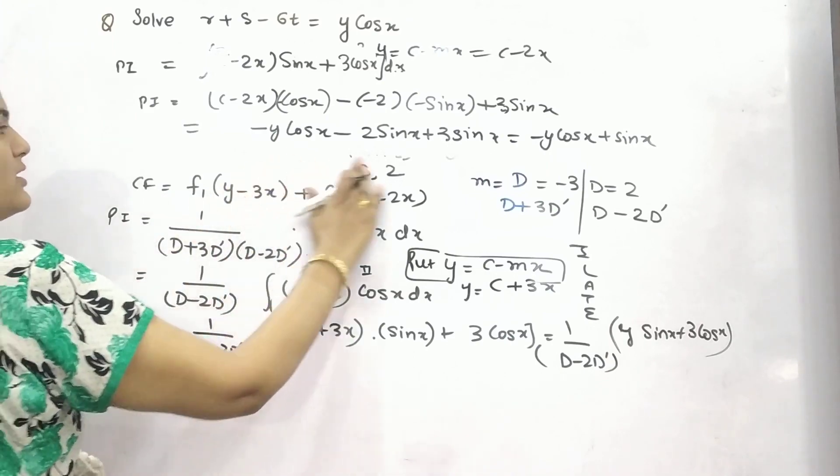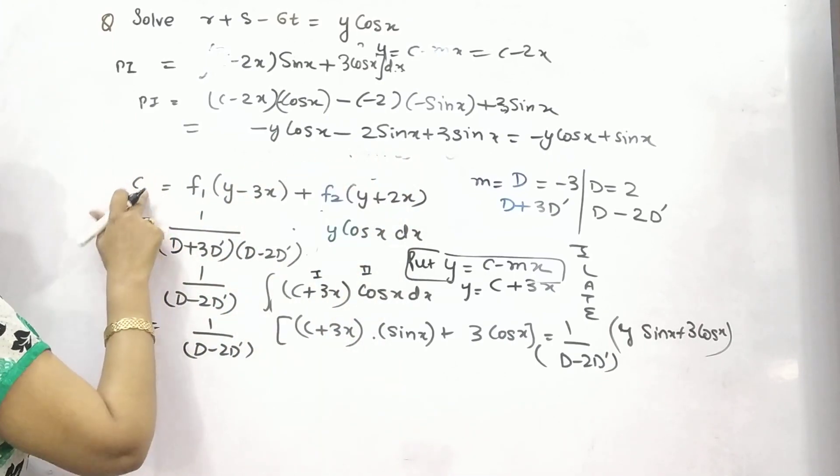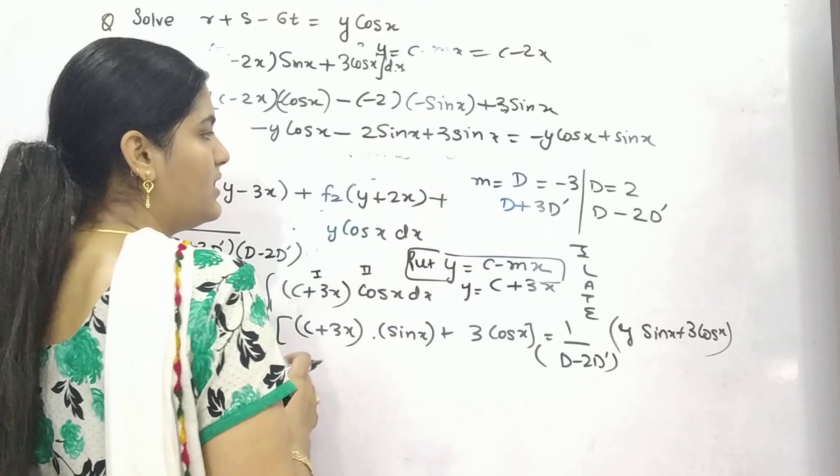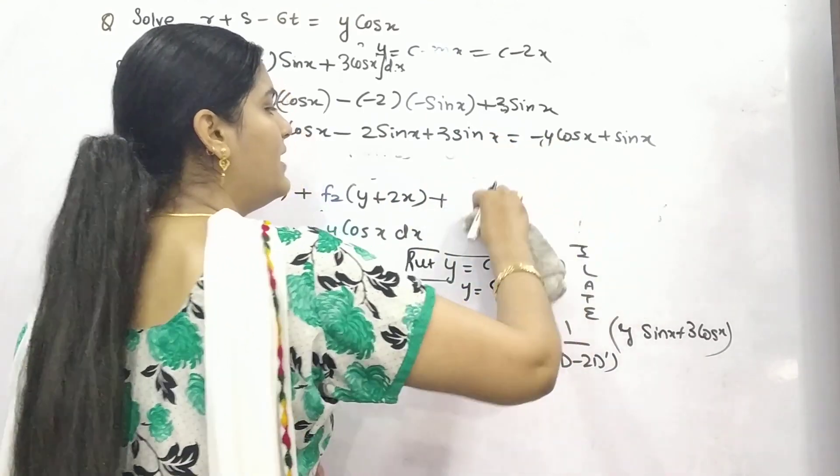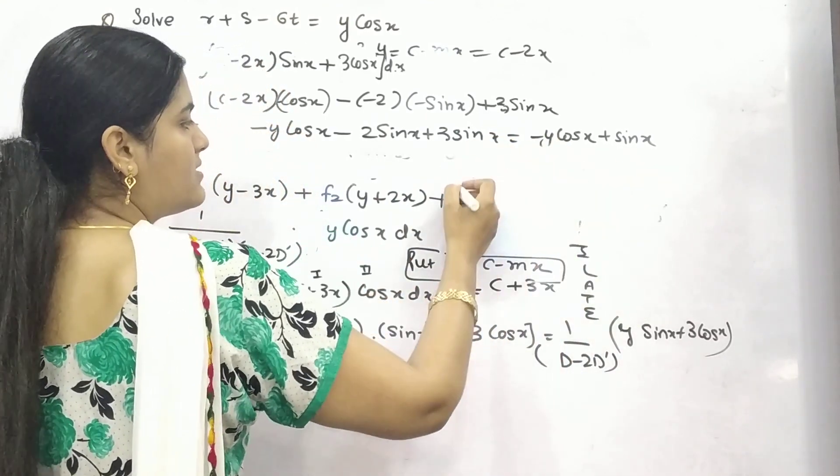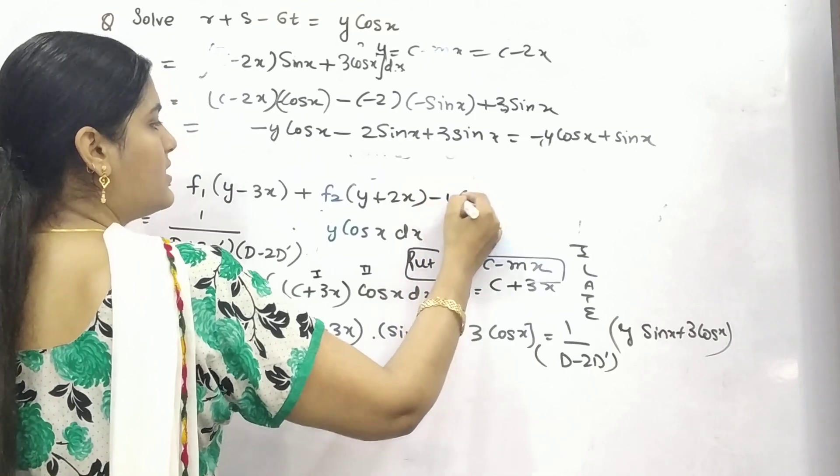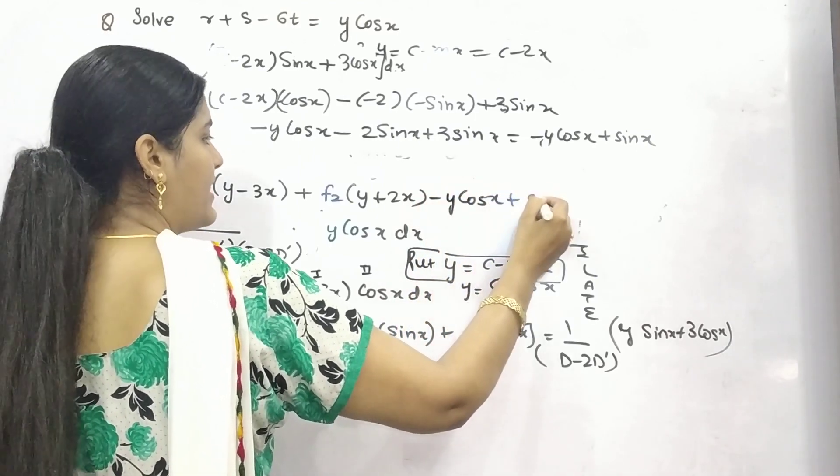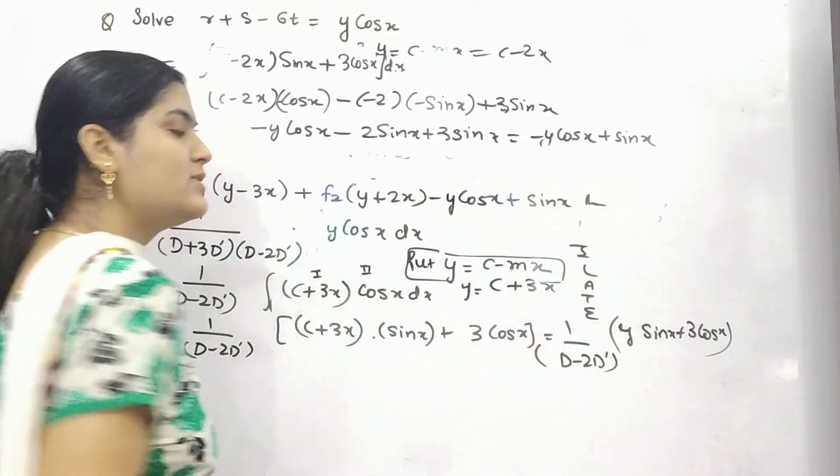Now your complete solution will be complementary factor plus particular integral. And your particular integral is -y cos x + sin x. This is your answer.